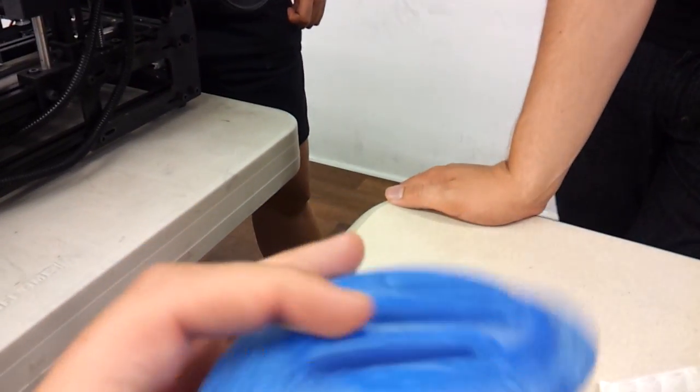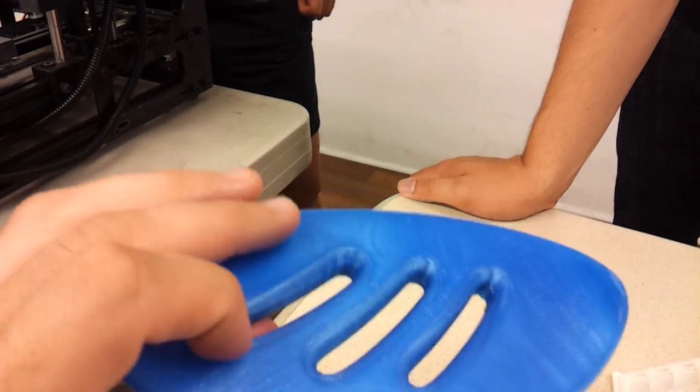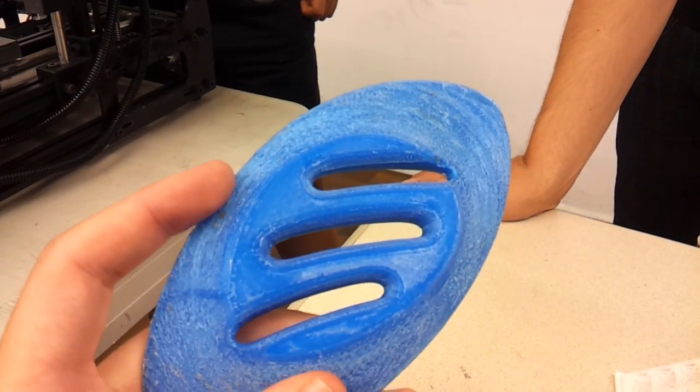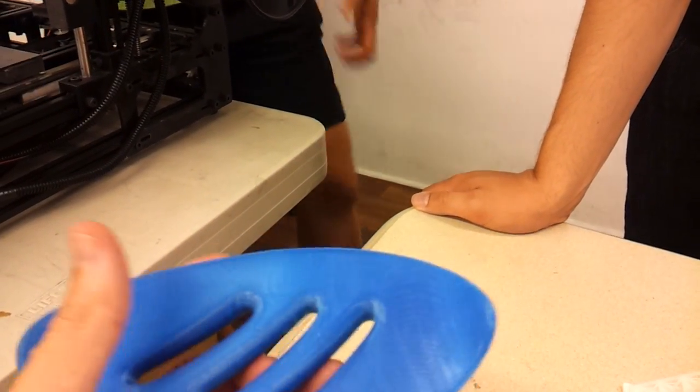This is a sample we printed for this designer in Australia who makes really awesome resin castings like this and was looking to get a printer to print his molds. It feels really solid. Definitely.